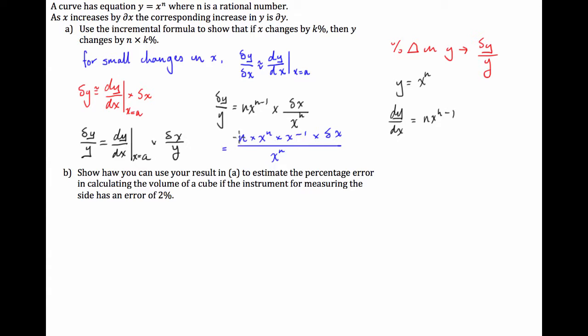What we're going to do is rewrite this as n times x to the n times x to the negative 1 using index law, times delta x, all divided by x to the n. And because we just have multiplication at the top, we can use this to cancel out our x to the n's.